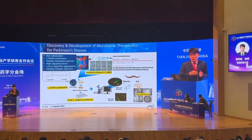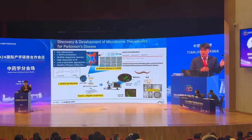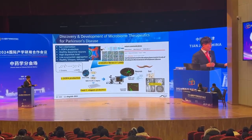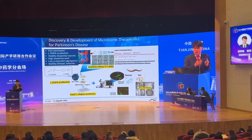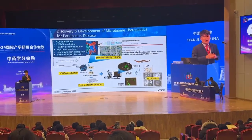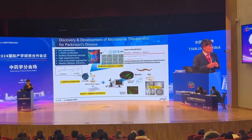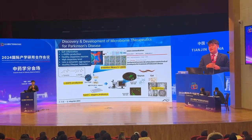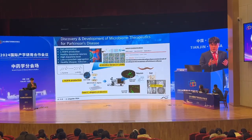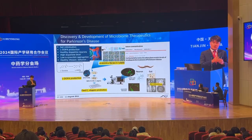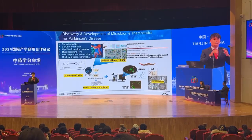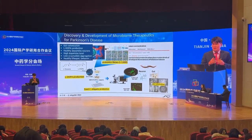Levodopa is a precursor of dopamine, and only levodopa can penetrate the BBB — the blood-brain barrier. These probiotics can help maintain healthy dopamine neurons. We monitored the dopamine neurons of C. elegans after feeding the microorganism, to find organisms that support dopamine neurons. We also cut the body and examined the intestine under electron microscope, confirming good colonization of the microbial cells.